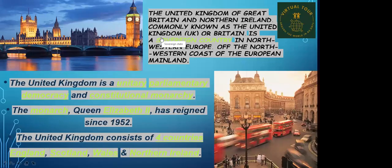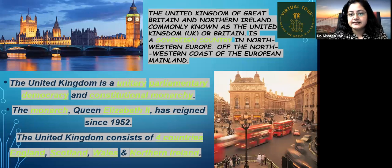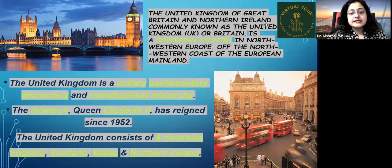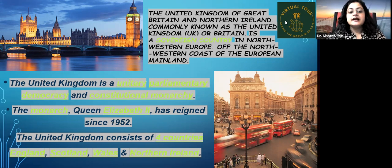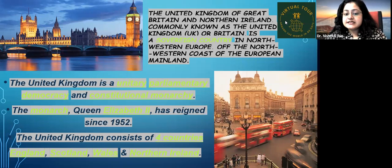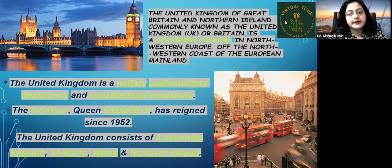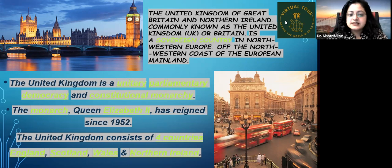The United Kingdom of Great Britain and Northern Ireland, commonly known as the United Kingdom or Britain, is a sovereign country in northwestern Europe, off the northwestern coast of the European mainland. The United Kingdom is a unitary parliamentary democracy and constitutional monarchy. The monarch, Queen Elizabeth II, has reigned since 1952. The United Kingdom consists of four countries: England, Scotland, Wales, and Northern Ireland.